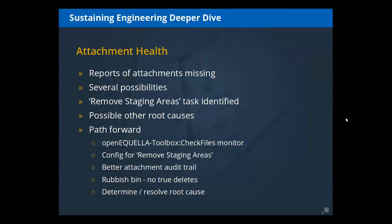We're looking at having a rubbish bin — Open Equella never really deletes anything, so when you purge an item, all of that content would get moved into the rubbish bin with an audit log text file explaining why it was put there. It then just leaves it alone, so if you notice missing attachments you can go back there with a higher likelihood of being able to recover. All of these efforts aim to help the community determine and ultimately resolve the root causes of missing attachments.